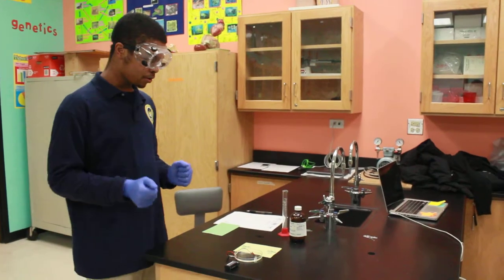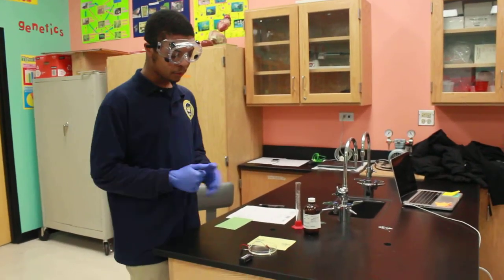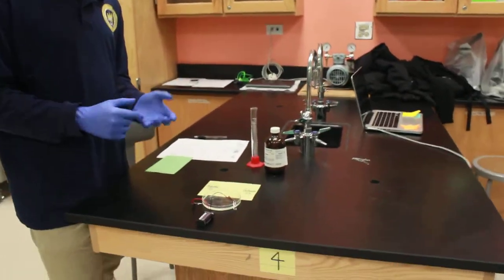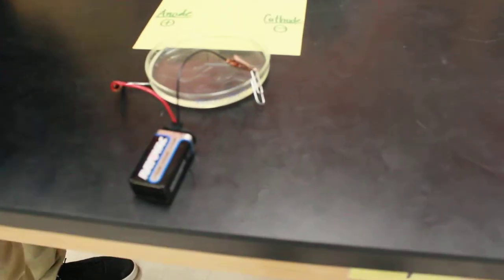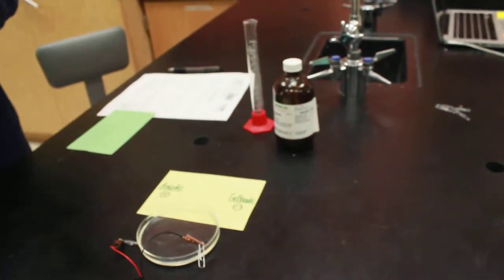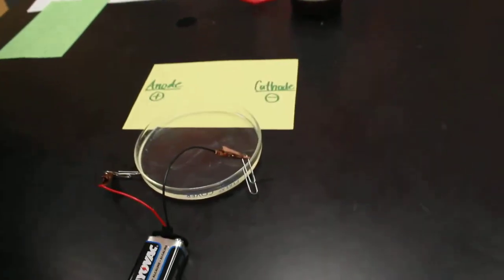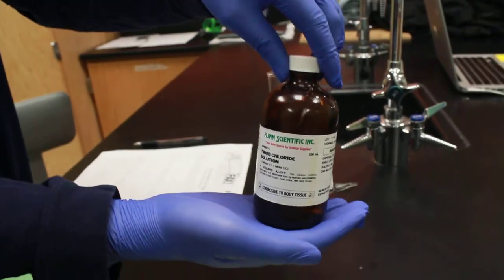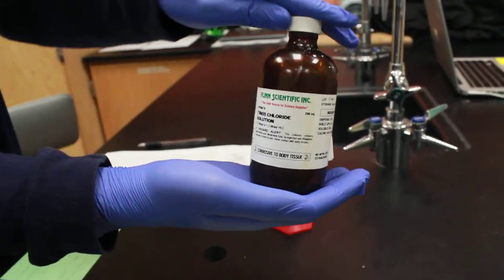For this experiment, we will need a 9-volt battery, a 9-volt battery cap, alligator wires, alligator clips, paper clips—small, they have to be small—and the tin chloride solution, that's one molar.